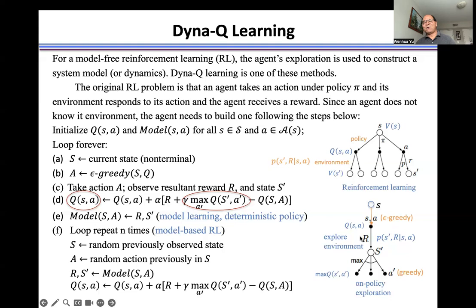Once we know this r and s prime is what we need, then now we can based on this information create a system model. That means we generate, we create a state transition probability. That means how from state s, select action a, we receive this reward and then move to the next state.